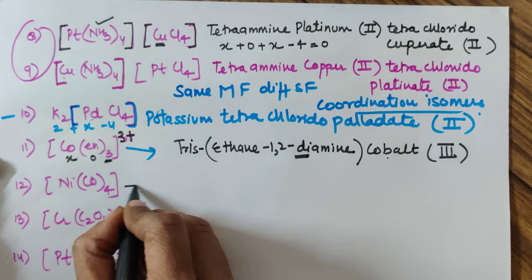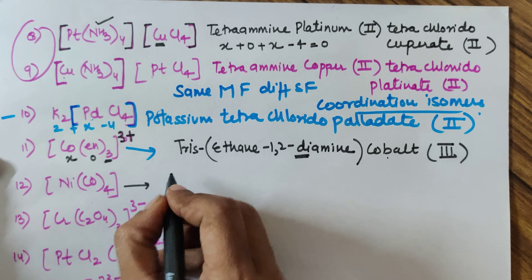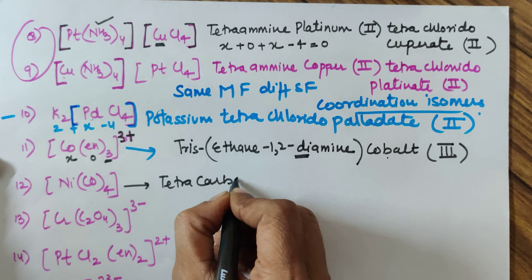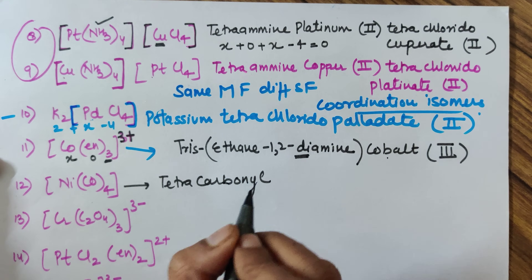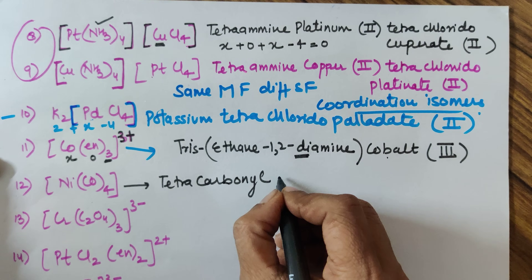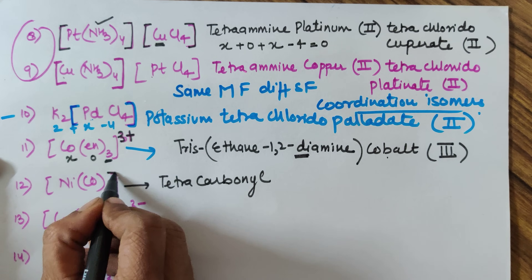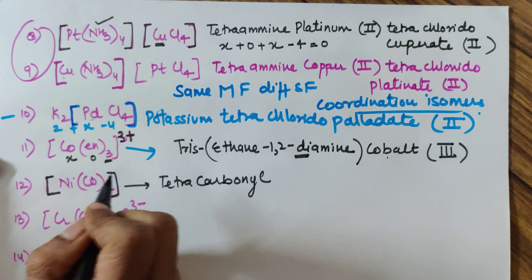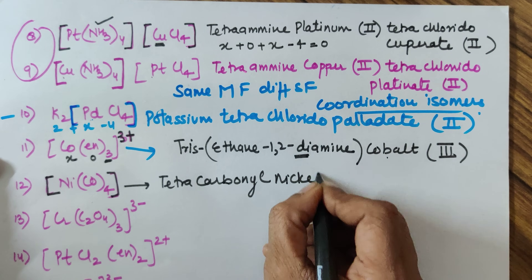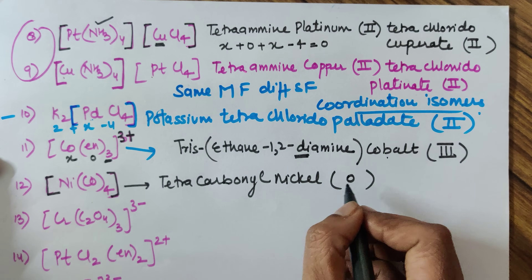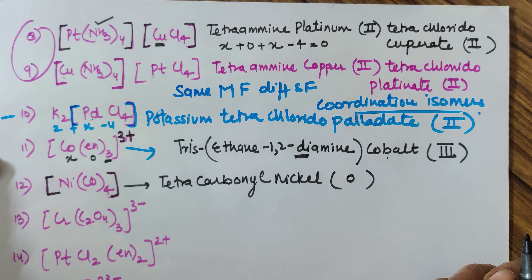Example twelve: there are four CO ligands, so it is tetracarbonyl — CO is called carbonyl. If you don't know this, please watch the last video on the list of ligands. In this complex there is no charge, so it is treated as the cation and the name is tetracarbonyl nickel. The oxidation number of nickel is 0 — although in Roman numerals you don't normally write zero, here you must write (0).